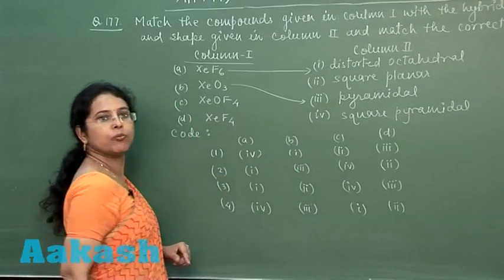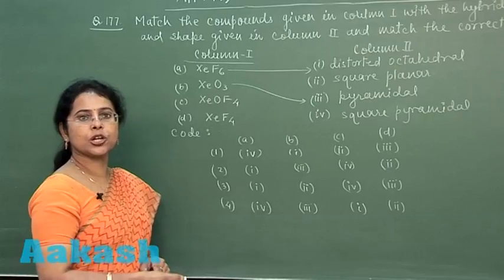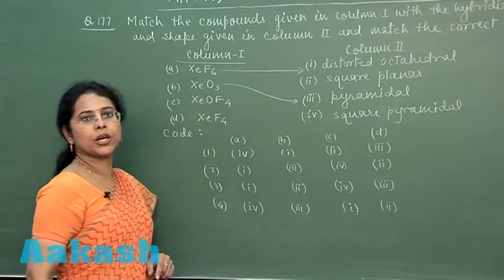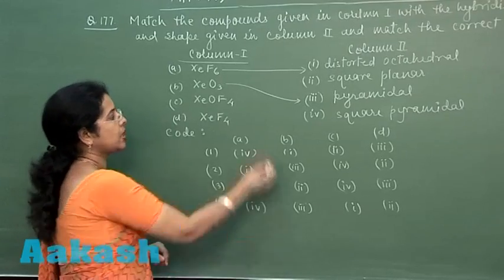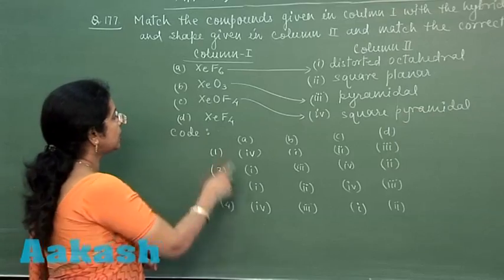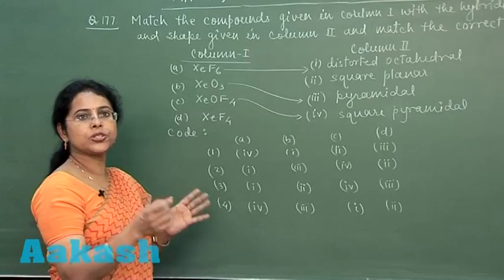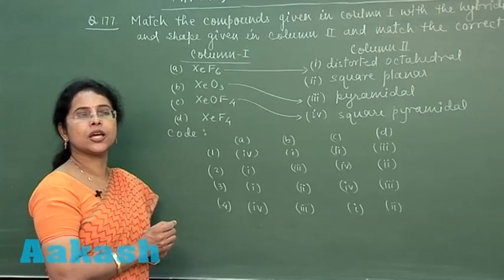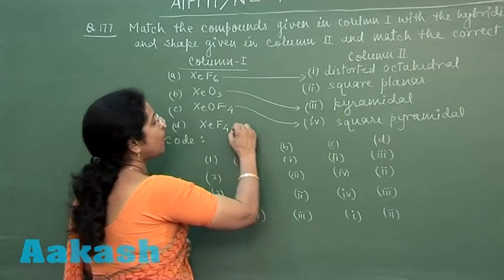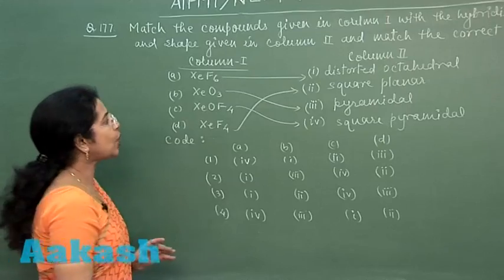The third compound, xenon oxytetrafluoride (XeOF₄), has 5 bond pairs and 1 lone pair, so its shape should be square pyramidal. The last compound, xenon tetrafluoride (XeF₄), has a central atom in the sp³d² hybrid state, but the shape of the molecule is square planar.